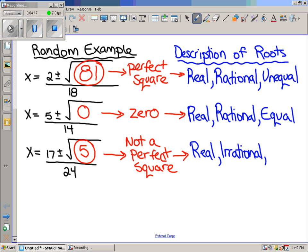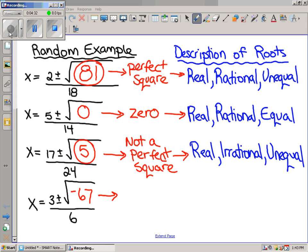And then, well, we're going to have to be plussing and minus something. So, it's going to be unequal. Okay. So, last and final example, we got a negative underneath the square root. Oh, my God. Negative number.